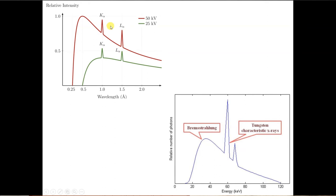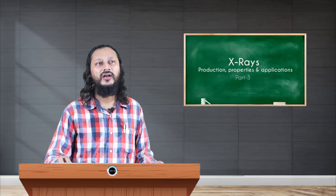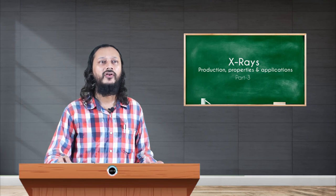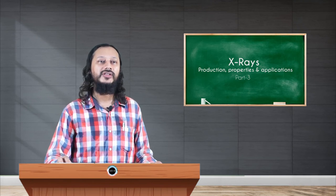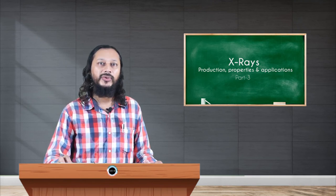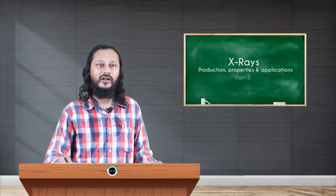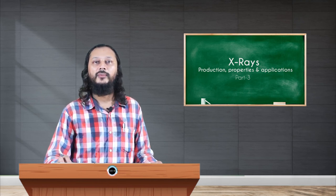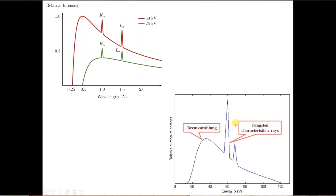This is K sub alpha and K sub beta and K sub alpha and L sub alpha for those 2 particular regions. So this graph simply reiterates what I have been saying so far. Continuous Bremsstrahlung, peak, sharp, well-defined wavelengths correspond to characteristic X-rays.